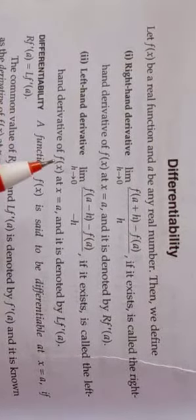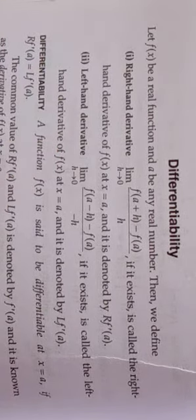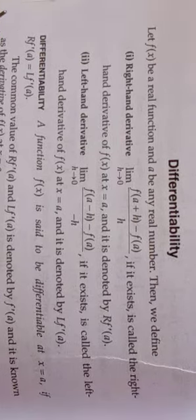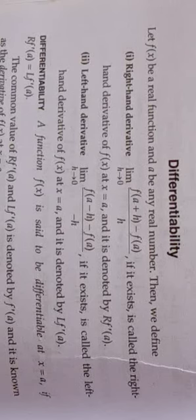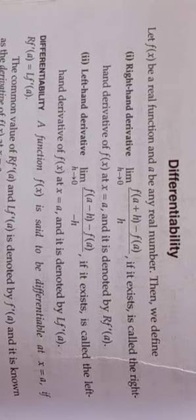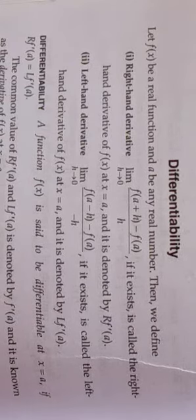Now I am going to start differentiability from the continuity and differentiability chapter. If f(x) be a real function and 'a' be a real number, then we can define the derivative in two forms. The first is the right-hand derivative and the second is the left-hand derivative. The right-hand derivative is defined as the limit h→0 of [f(a+h) − f(a)] / h, if it exists.